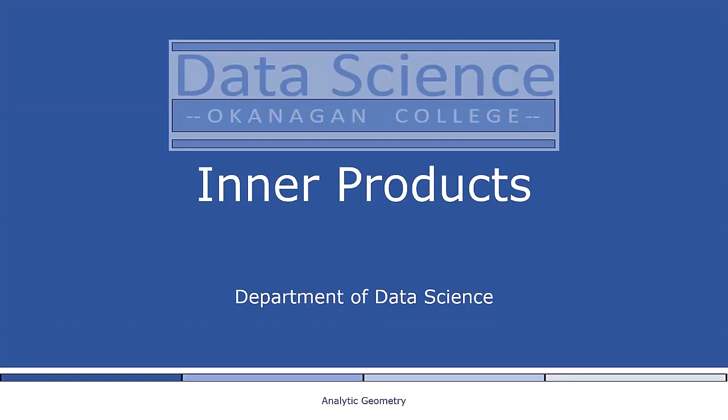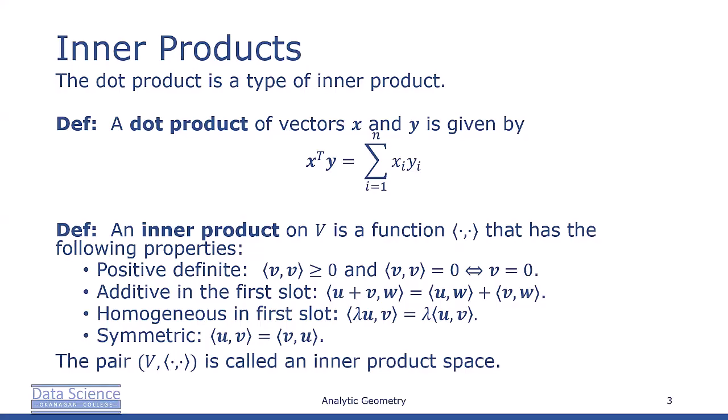Inner products help us determine properties such as the length of a vector and the angle or distance between two vectors. A major purpose of inner products is to determine whether vectors are orthogonal to each other. We may already be familiar with a particular type of inner product.